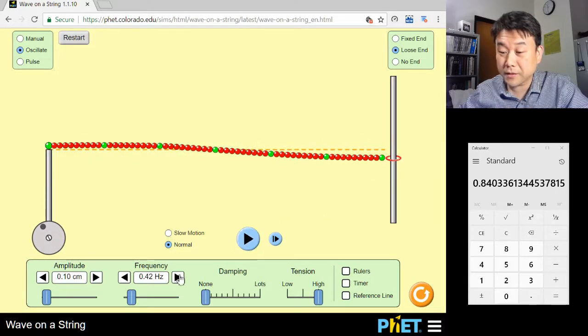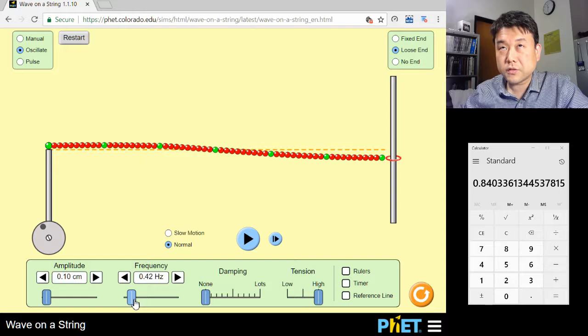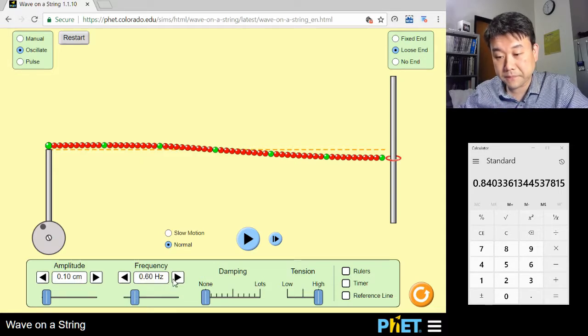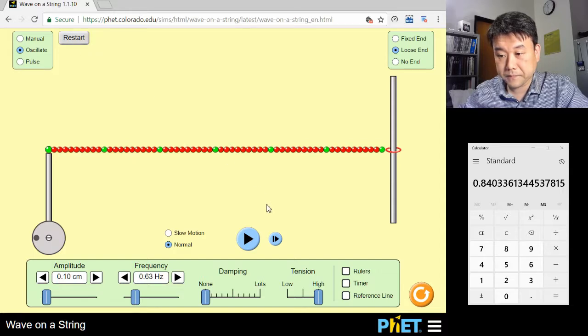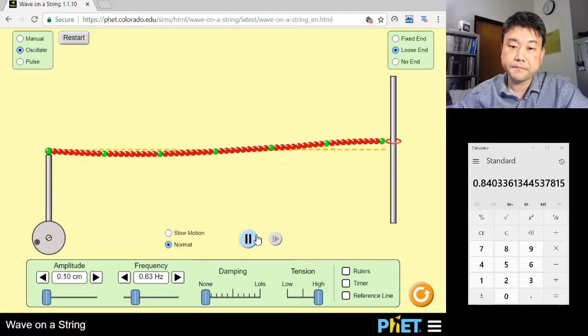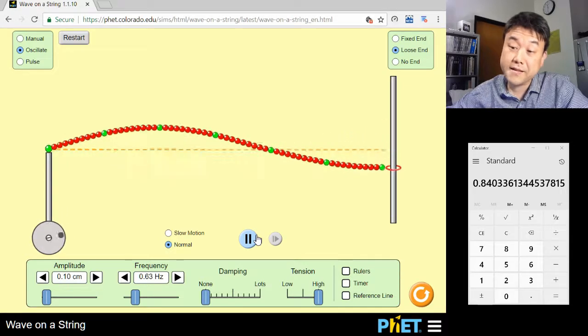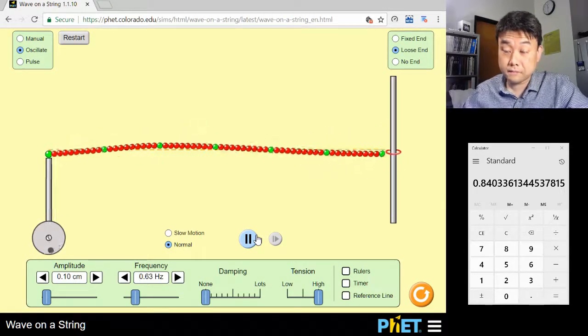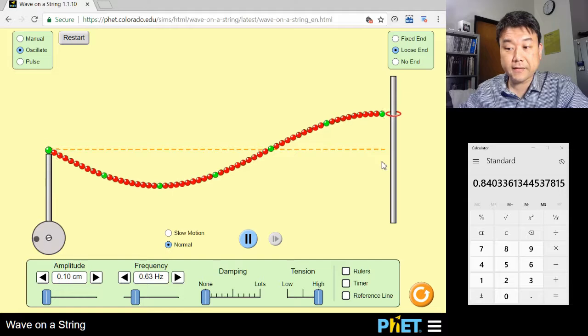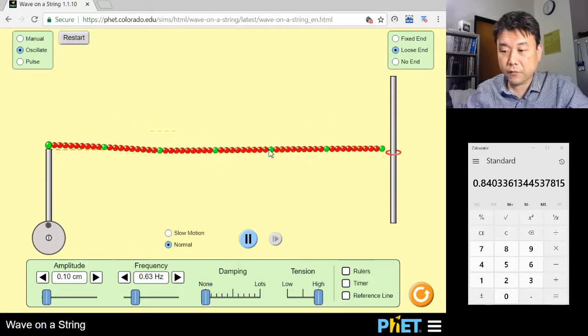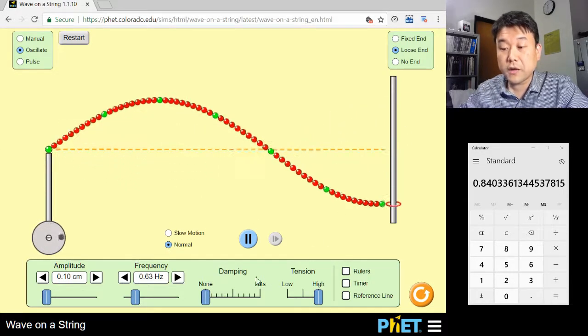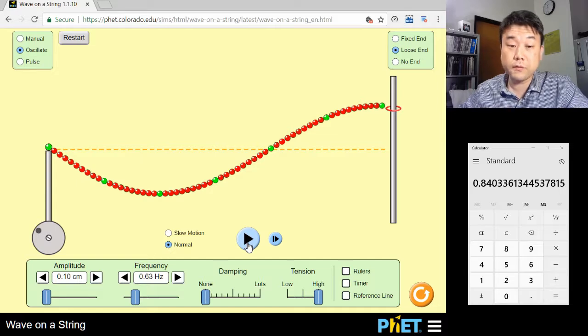All right, let's try tripling the frequency. So 0.21 times 3, 0.63. Then I get a standing wave again. Again, with the antinode at the end. This is half of a wavelength and then a quarter. So this is three quarters of a wavelength.